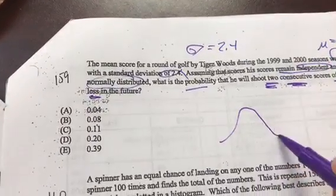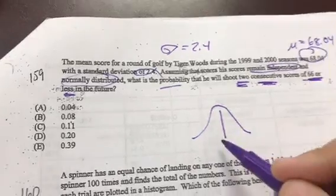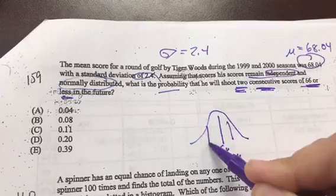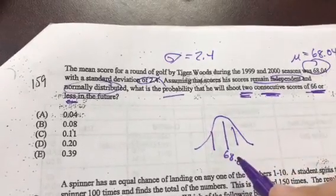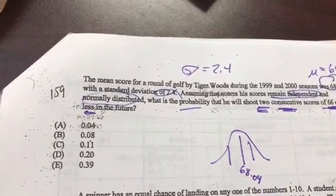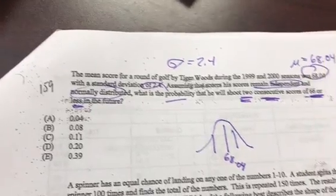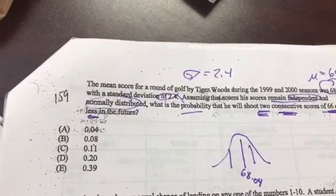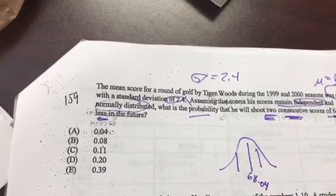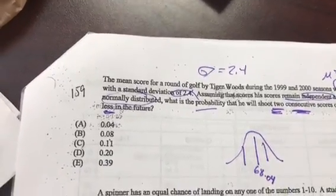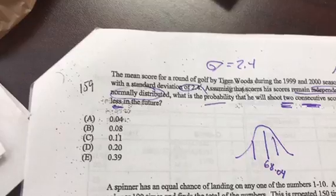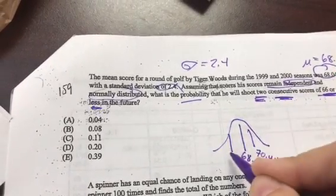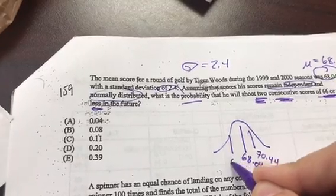Okay, so we got something like this. We got 68.04 and we know it's normally distributed, so we can assume that to the left and right of the mean would be one standard deviation away. So that would be, let me do my calculations here. That would end up being around 70 and around 66 here.